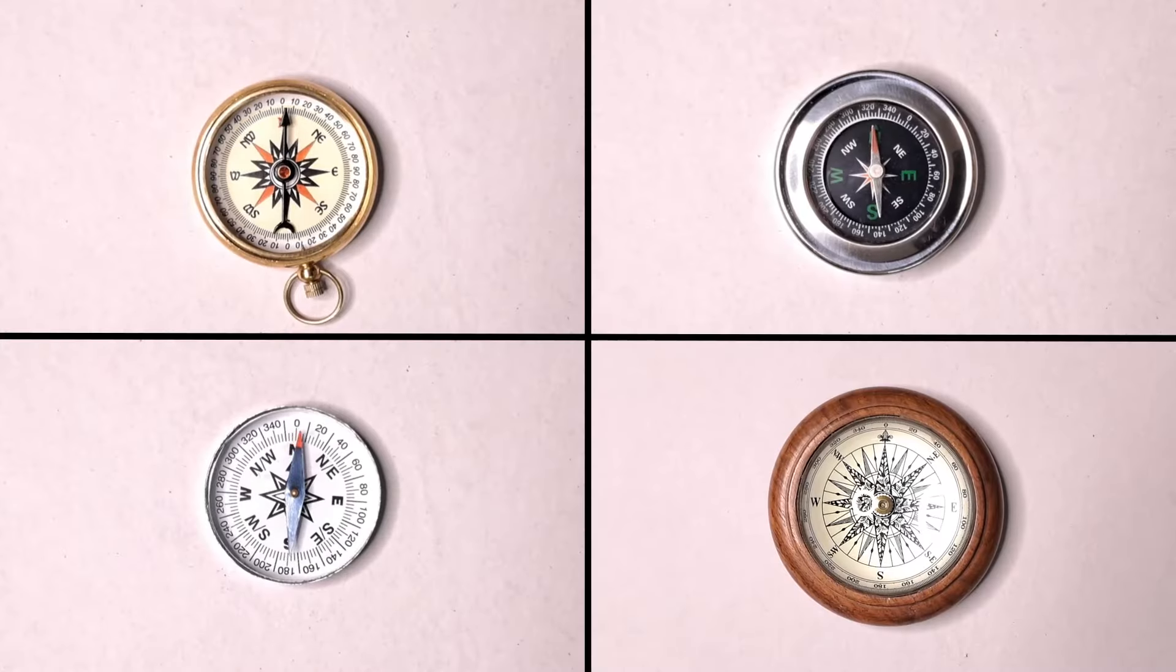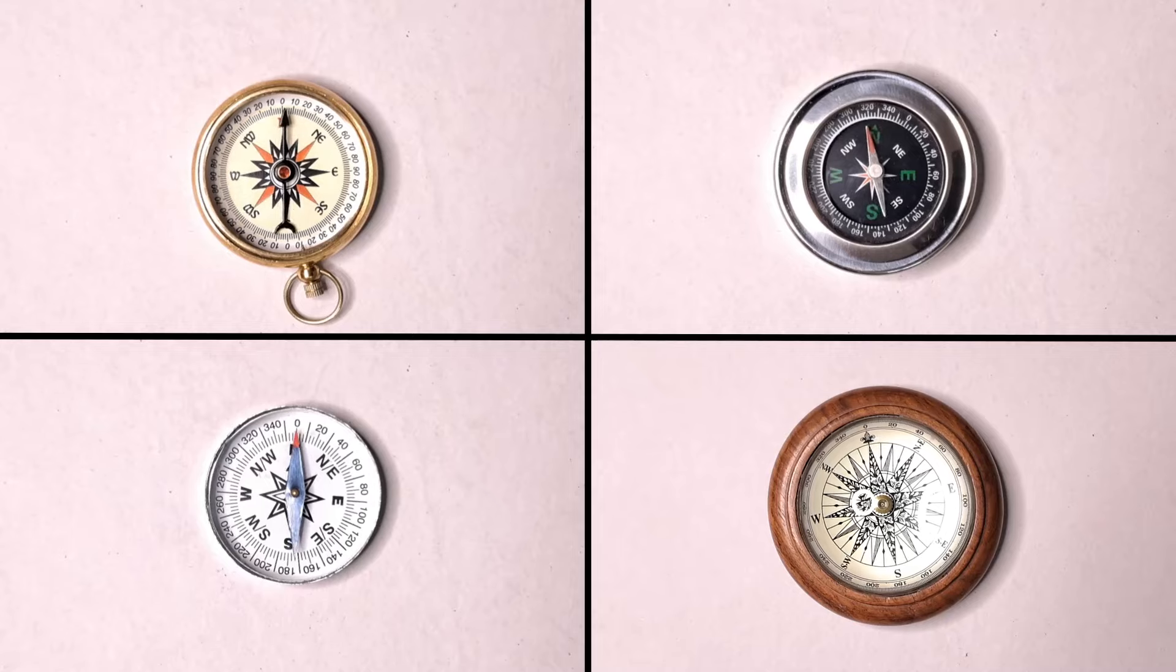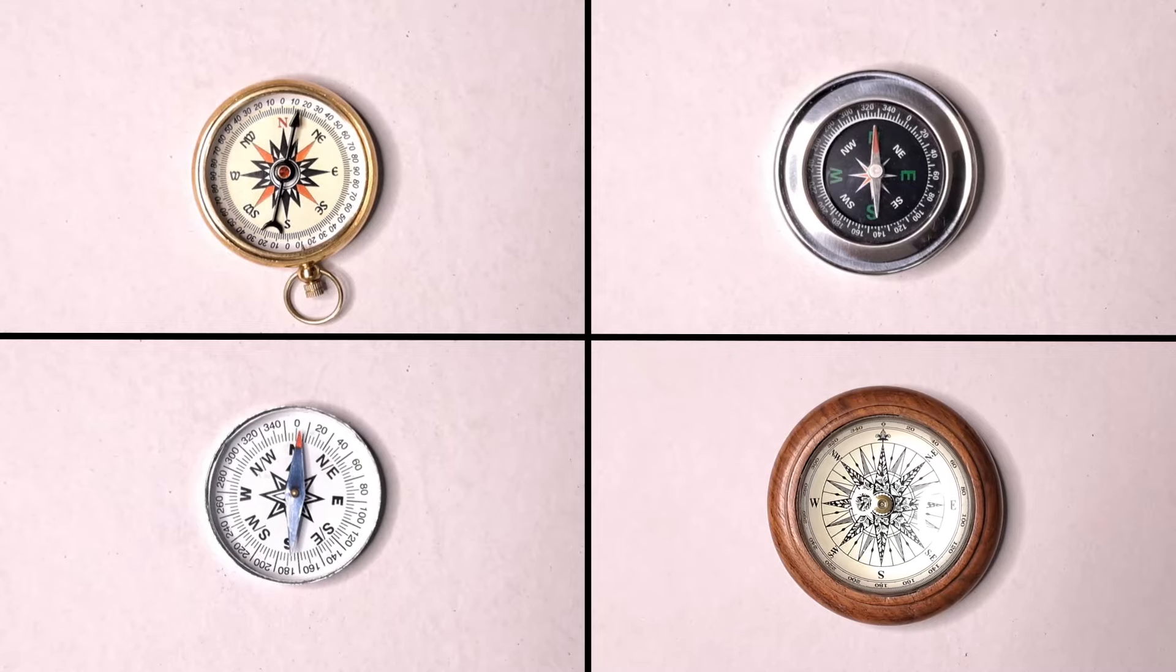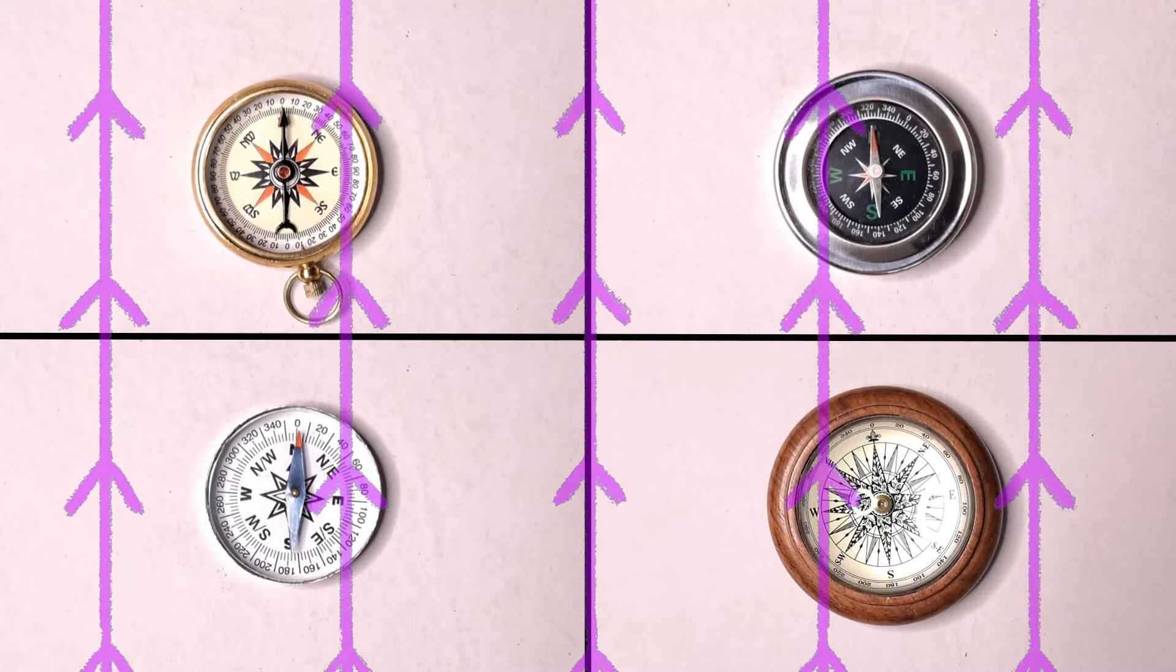The compasses on the other hand are fully aware of the absolute truth. So they don't argue. They don't fight. They just effortlessly know the truth. Because the magnetic field of the earth is a common force that flows through all of them and unites them.